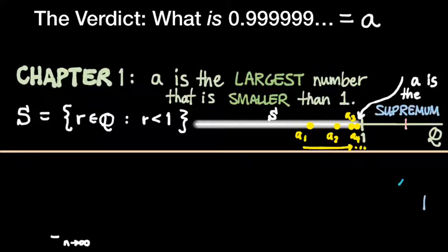So the completeness axiom was our first way of getting at the identity, the origin, if you like, of the real numbers from the rationals. But it wasn't the only way.